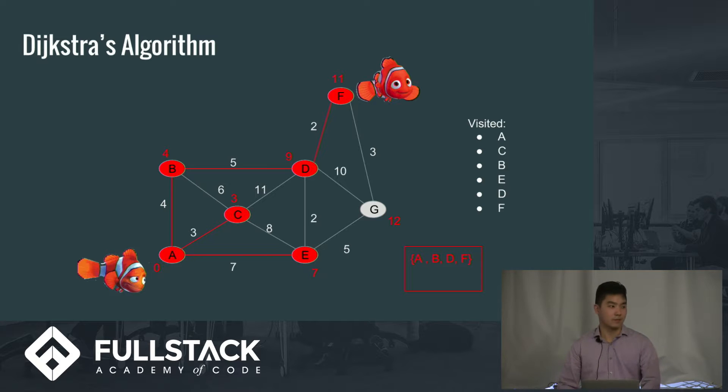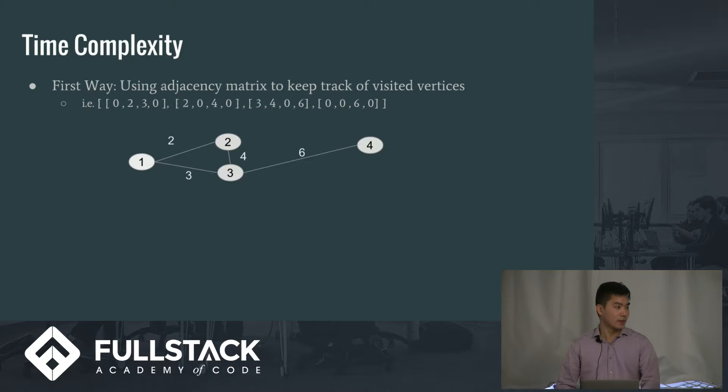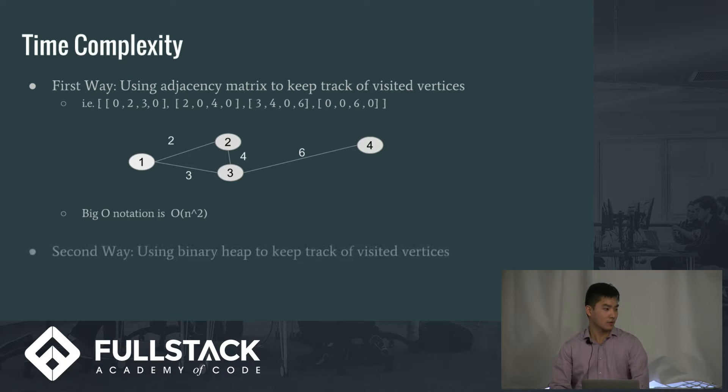So what's the time complexity of this algorithm? There's two ways to go about implementing this. The first way is to use the array like I did to keep track of visited vertices. So in this case, the big O notation is O(n^2), because you have to go through each array within the array. The second way is to use a binary heap to keep track of visited vertices. In this case, the big O is n times log n.